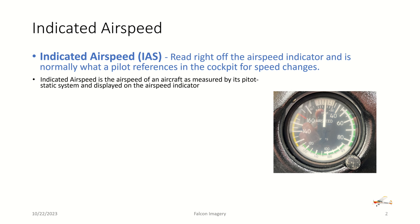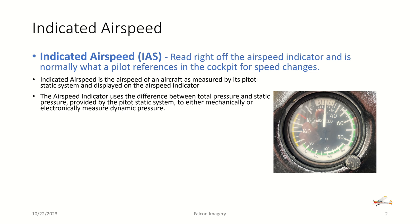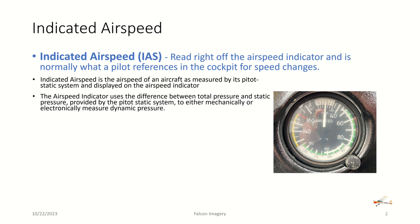The indicated airspeed is the airspeed of an aircraft as measured by its pitot-static system and displayed on the airspeed indicator. The airspeed indicator uses the difference between total pressure and static pressure provided by the pitot-static system to either mechanically or electronically measure dynamic pressure.